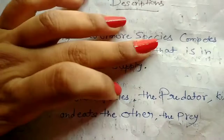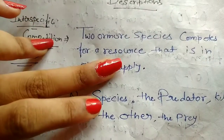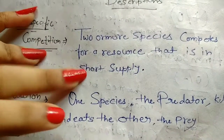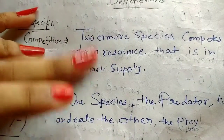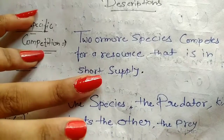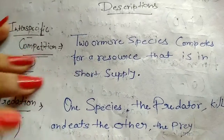Two or more species compete for the same resources that are in short supply. If there are two species and resources are in short supply, then both species will be harmed.